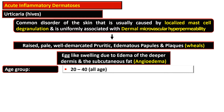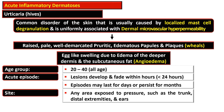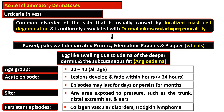In acute episodes, lesions develop and fade within hours, comprising less than 24 hours. In some cases the episode may last for days or persist for months. Any area exposed to pressure — such as trunk, distal extremities, and ear — is predisposed to urticaria. Persistent episodes of urticaria occur in collagen vascular disorder and Hodgkin lymphoma.